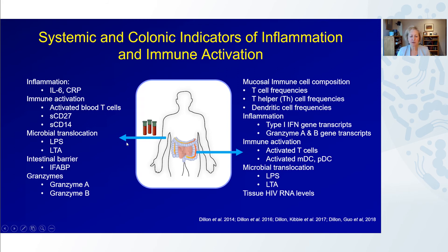The endpoints from this study included peripheral blood and plasma analyses — inflammatory readouts, immune activation markers, microbial translocation, intestinal barrier, and plasma granzymes. Based on colonic biopsy analyses, we also looked at mucosal immune cell composition, inflammation by gene transcripts, immune activation and microbial translocation markers, and tissue HIV levels.